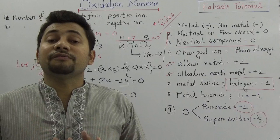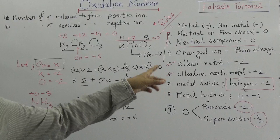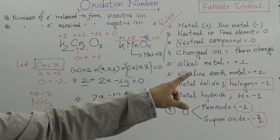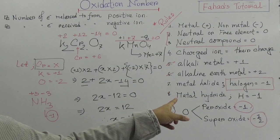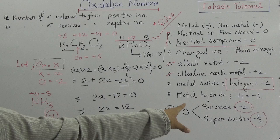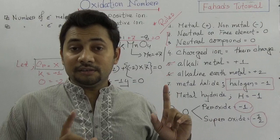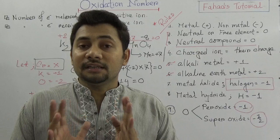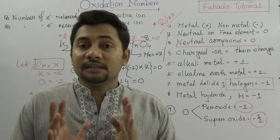To summarize: just follow these rules to find oxidation numbers. Metals are positive, non-metals are negative, free elements are 0, total neutral compounds are 0, charged ions equal their charge, alkali metals are +1, alkaline earth metals are +2, halogens in halides are −1, hydrogen in hydrides is −1, oxygen in peroxides is −1, and oxygen in superoxides is −½. This is all about oxidation number. The next video will cover the difference between oxidation number and valency. See you soon!